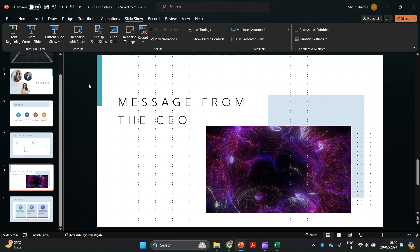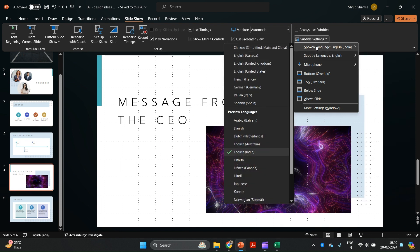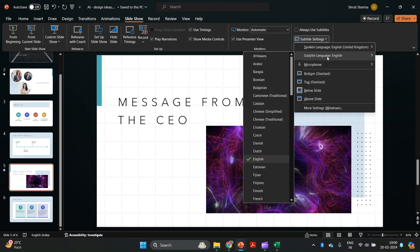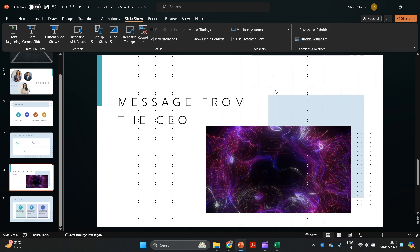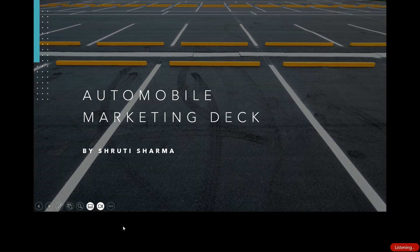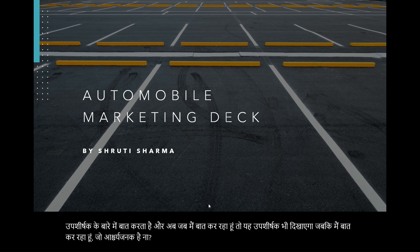Another thing you can now do with AI is set live subtitles. Right now the spoken language I'm using is English UK, and the subtitle language I want to add is Hindi. When I go into full-screen presentation mode, I click the subtitles option on the left, and now as I'm talking, it will show the subtitle in real time — which is amazing, because it's not just using the same language but actually converting it into a language of your choice.